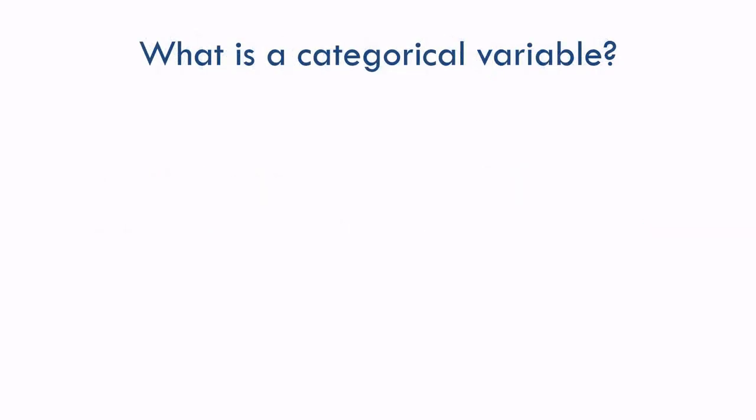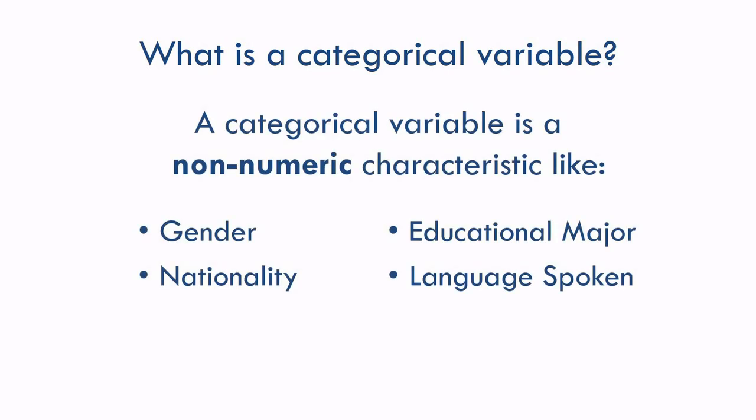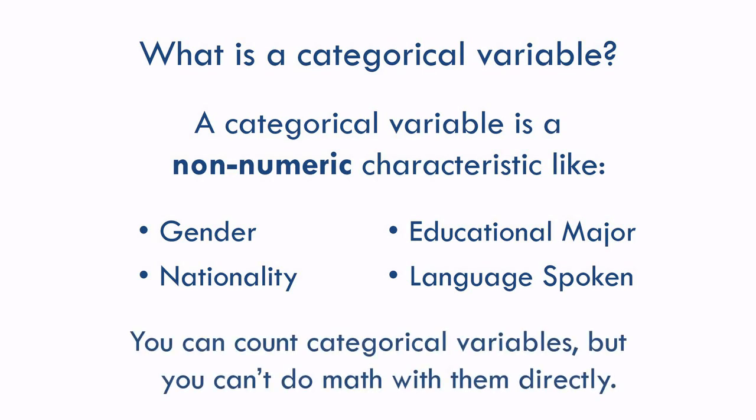But what is a categorical variable? It's any non-numeric characteristic. Examples of this could include gender or nationality. In contrast, a numeric variable would be something like length or weight that has a number in it. Categorical variables are things you can count, like how many boys or girls are in your class, but you can't do math with them directly because they aren't numbers.